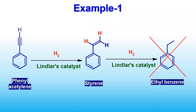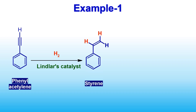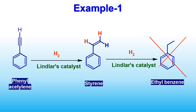Now let us go through a few examples. Phenyl acetylene, an alkyne, when hydrogenated in the presence of Lindlar's catalyst, gives styrene, a cis alkene. You can clearly see the two hydrogens are added from the same side of the triple bond, so a cis alkene is formed. Further hydrogenation of the double bond to give ethylbenzene, which is an alkylbenzene, is not possible.